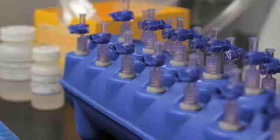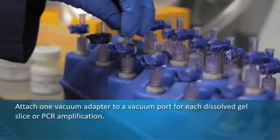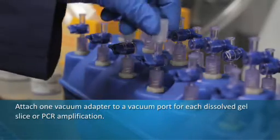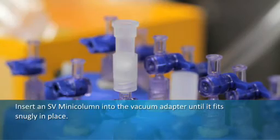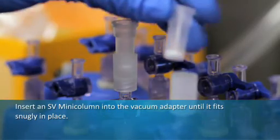Attach one vacuum adapter to a vacuum manifold port for each dissolved gel slice or PCR amplification. Insert an SV mini column into the vacuum adapter until it fits snugly in place.